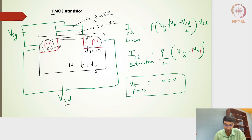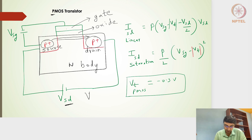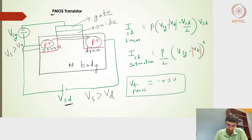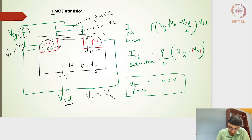We label this as VSD, which implies that the potential of the source is greater than the potential of the drain. Similarly, the potential of the source is greater than that of the gate — the gate is at a negative potential with respect to the source. The body is usually considered to be at VDD, that is, at a higher potential.